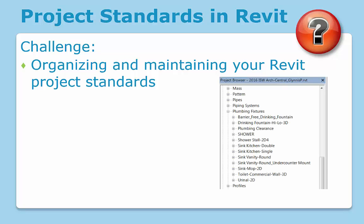This requires everyone on the team to be very diligent when it comes to creating, loading, modifying, and duplicating families, annotations, and their type parameters. However, as with most projects — and especially those which are complex and fast-paced — there is always the possibility of error. How can we then ensure that our model is being organized based on our office Revit project standards?